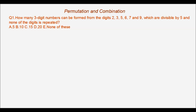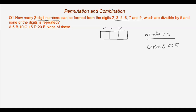Question number one: how many three-digit numbers can be formed from the digits 2, 3, 5, 6, 7, and 9 which are divisible by 5 and none of the digits is repeated? We need to find three-digit numbers, so we make a box of three digits. For a number to be divisible by 5, it should end with either 0 or 5. In the given data we do not have 0, so we have only 5. Therefore the last digit must be 5, and there is only one way to place it. Since digits are not repeated, 5 cannot be used again.